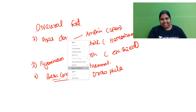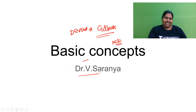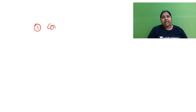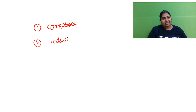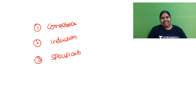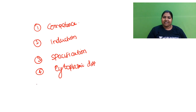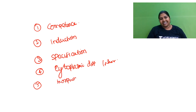Today we are covering Unit 5A — the basic concepts in developmental biology. This includes key terms like competence, induction, specification, determination, differentiation, cytoplasmic differentiation, and morphogenetic gradients.